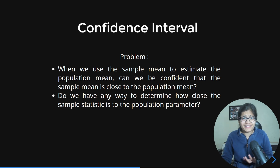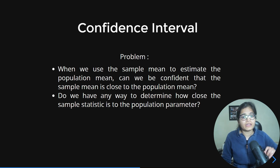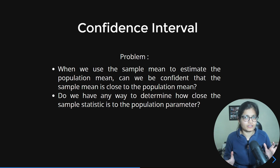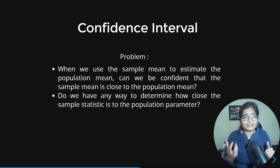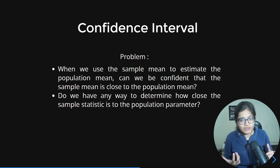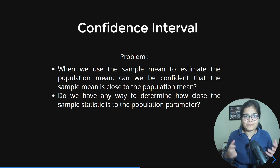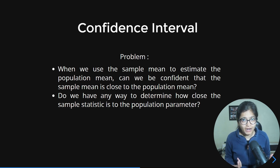The question is: do we have any way to determine how close the sample statistic is to the population parameter? Before watching the next part, pause and give me your response — what do you think? When researchers initially talked about population and sample, this question came up: we have the sample mean and are trying to draw conclusions about the population mean, but how confident are we about that?